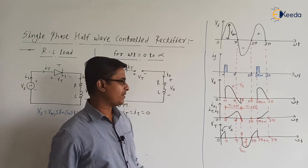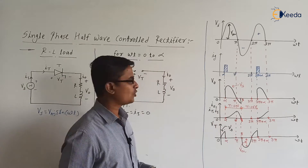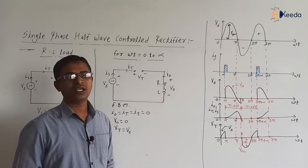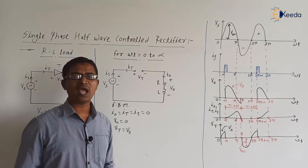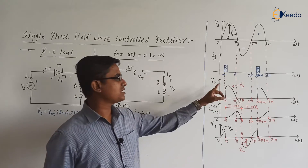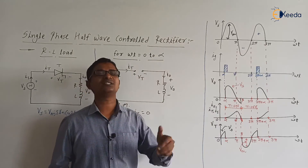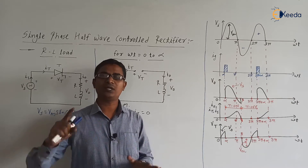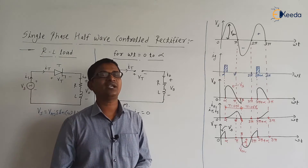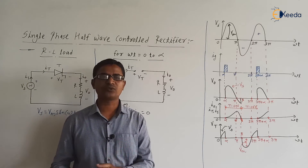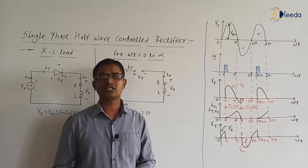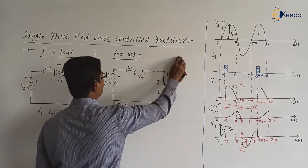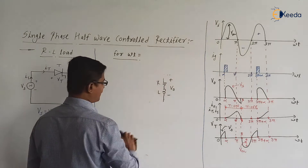At ωt = α, the load current is zero, meaning the current flowing through the inductor is zero. Now, at ωt = α, if we apply the gate signal, this inductor will oppose the sudden change in current — from zero ampere to a sudden non-zero ampere. Recall network theory and transient analysis: if the initial current flowing through the inductor is zero, then at the instant of switching, the inductor will behave as an open circuit. From ωt = α to π.